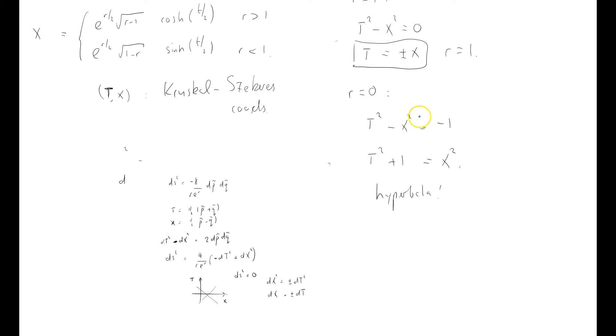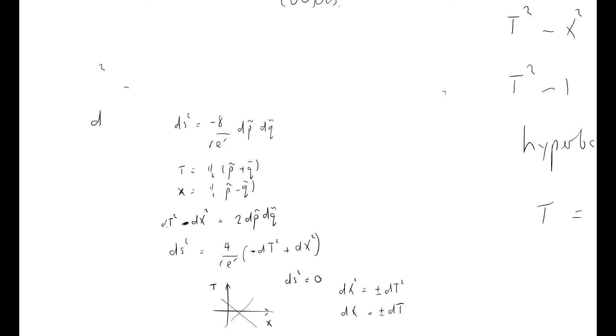General relativity, step by step. I think I've got a sign error here. I think it should be a plus 1. Yeah, so t equals plus or minus the square root of x squared plus 1. I think that's right. Yeah, that should be a minus 1.